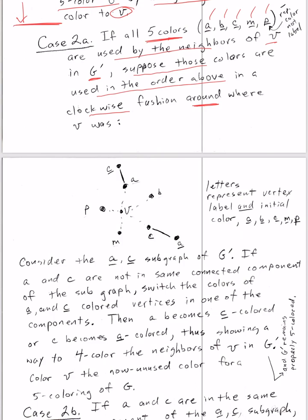Here I am using the letter to represent both the label and the initial color of that vertex. Here's where v was in g, and I removed it, and here's a, which is azure, b, which is blue, c, which is chartreuse, m, which is magenta, and p, which is purple, in graph g prime. Now I want to consider the subgraph of g prime that is induced by only considering vertices that are azure and chartreuse. If I do that, then the subgraph will include c and a, of course, and then anything that is connected to c and a that has the colors of azure and chartreuse.